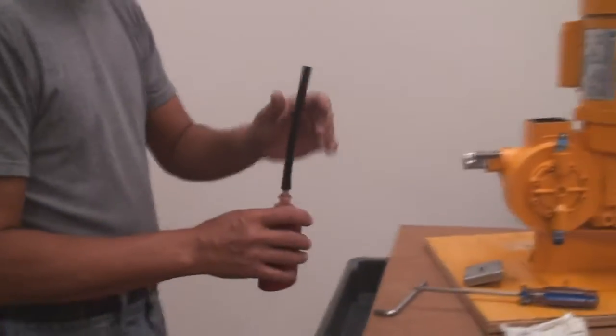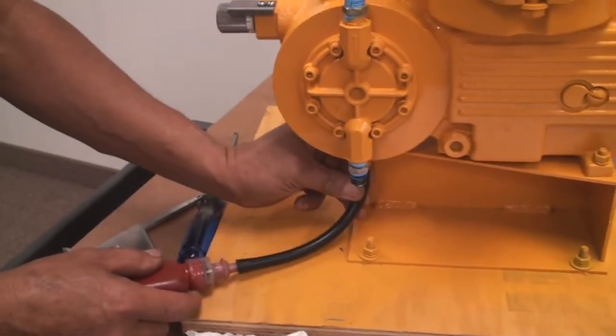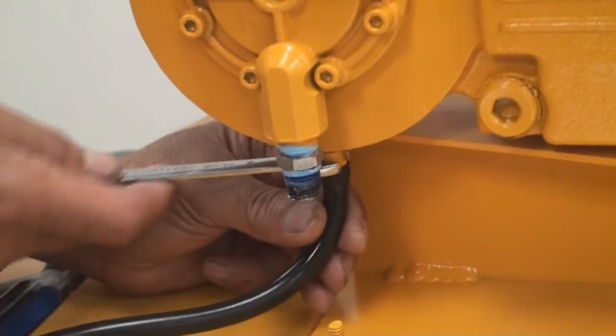Using a small 3/16th inch ID flex tube, insert one end of this tube into the bleeder plug just below the diaphragm head and loosen the bleeder plug.